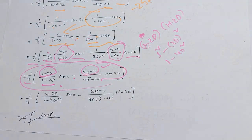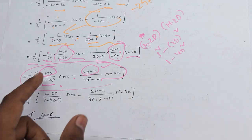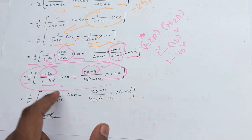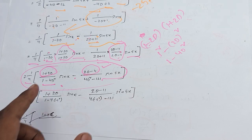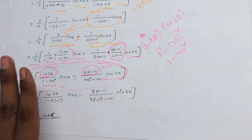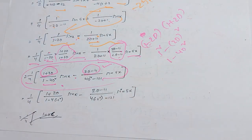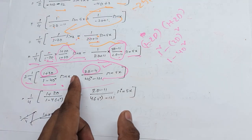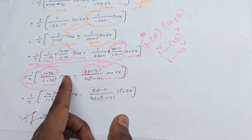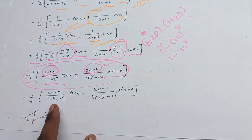Substituting: D squared replaced by minus x-coefficient squared. For the sin x term, x coefficient is 1, so minus 1 squared equals minus 1. For sin 5x, x coefficient is 5, so minus 5 squared equals minus 25.